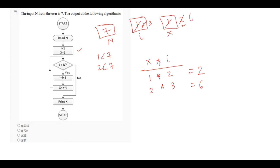Again, 3 less than 7, so we have to increment the value of i — that will be 4. Now again we find the value x into i. The present value of x is 6 into i, that is 4, which will be 24. So now the present value will change to 24.